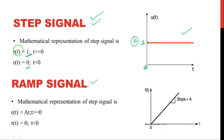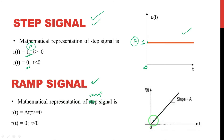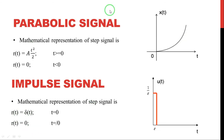The next signal is the ramp signal. The mathematical representation is r(t) = A·t. The ramp signal is linear — as time increases linearly, the value of the input increases proportionally. The value r(t) = A·t for t ≥ 0 and zero for t < 0.